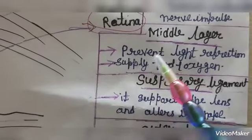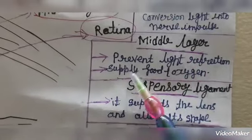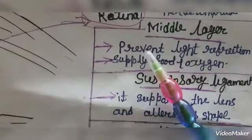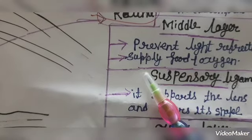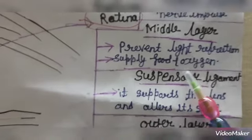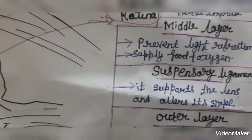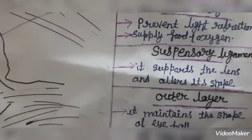Middle layer, middle layer's function is to prevent light reflection. It prevents light reflection, and its second function is supply food and oxygen to inner eye. Inner eye also needs oxygen, so middle layer supplies to inner eye.